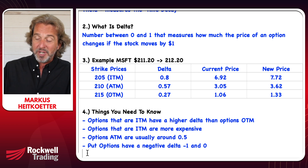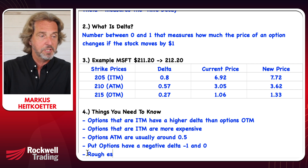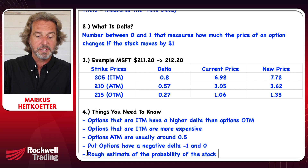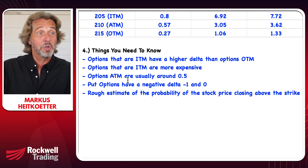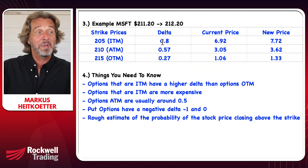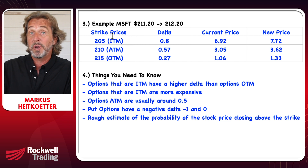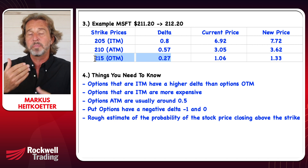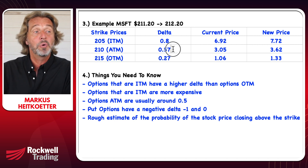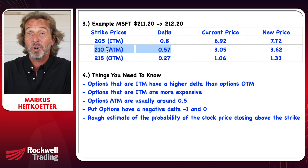Here's a really cool trick you might not have known: delta is a rough estimate of the probability of the stock price closing above the strike at expiration. A delta of 0.8 means there's an 80% probability that the stock will be above 205. A delta of 0.27 means there's a 27% probability the stock will be above 215. So delta gives you a rough approximation of how likely it is that the stock will be above or below the current strike price on expiration.